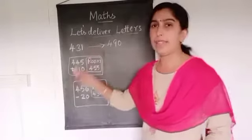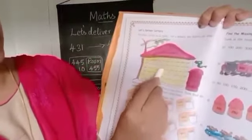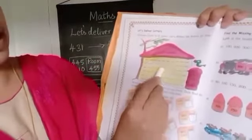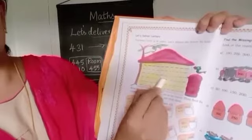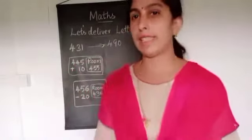And you can circle the room number here. See 445 is here, you can circle here. Okay, then next one.